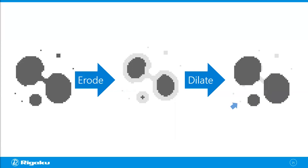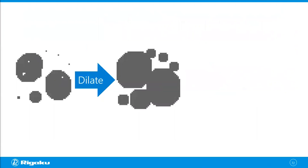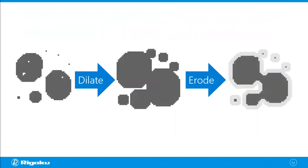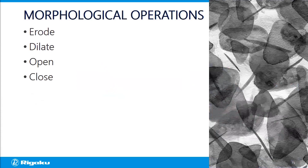The combination of erode then dilate is called an open operation — it separates objects and cleans up dust-like pieces. Conversely, if objects should be connected but are separated, and there are holes that shouldn't be there, you can dilate first to connect them and fill the holes, then erode back to maintain the size. This combination of dilate then erode is called a close operation — it connects objects and cleans up holes.